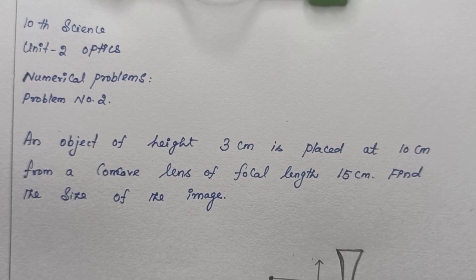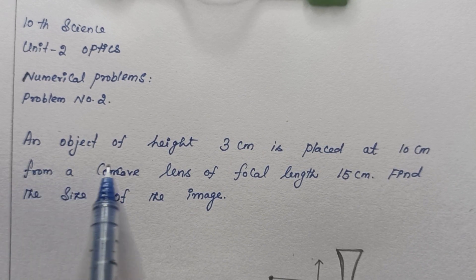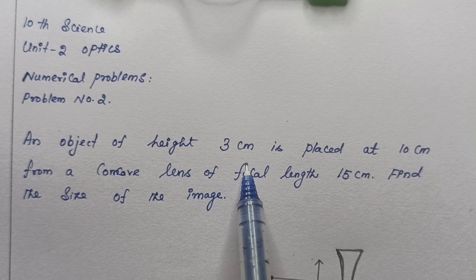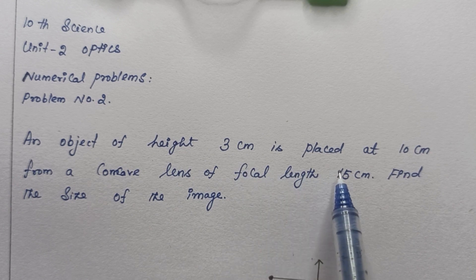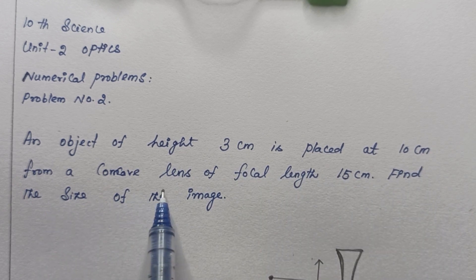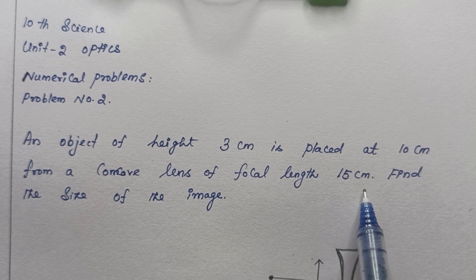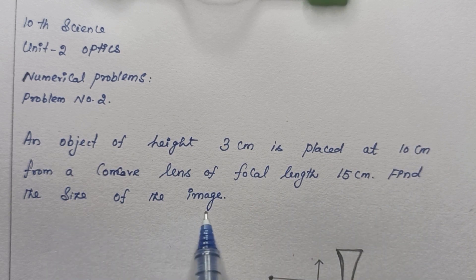Welcome to EMR Physics. I am Raju. Tenth Science Unit 2 Optics, Numerical Problems, Problem No. 2. An object of height 3 cm is placed at 10 cm from a concave lens of focal length 15 cm. Find the size of the image.